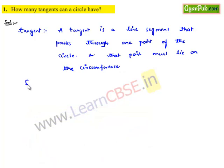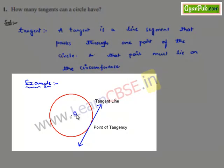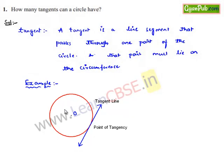Let us consider the following example. Consider a circle with center O, and here we have a line passing through one point of the circle. Therefore, it is called a tangent line. As there are a number of points that lie on the circumference of the circle, we can say every line or line segment passing through those points individually is a tangent of the circle.